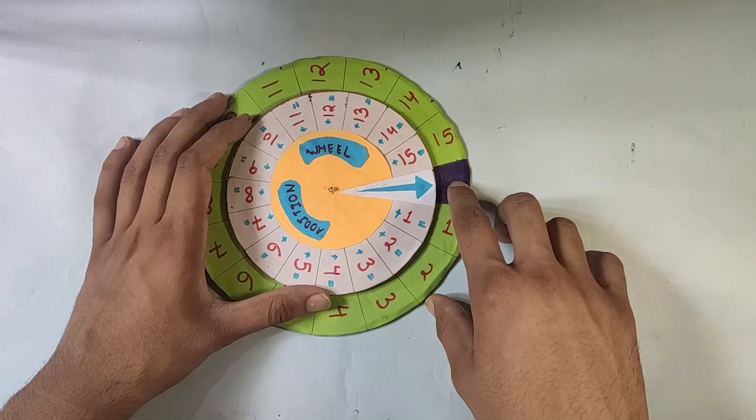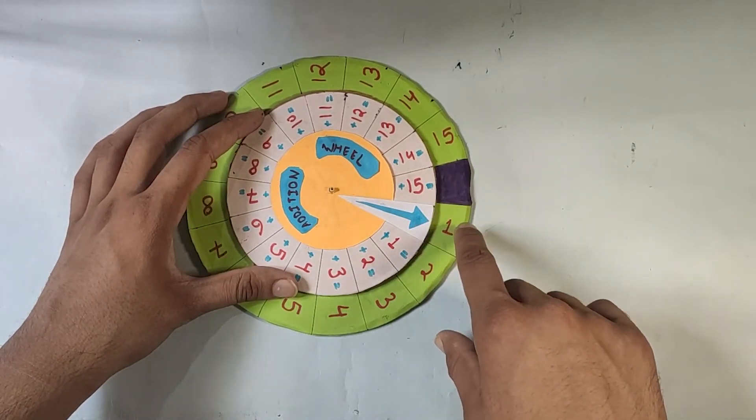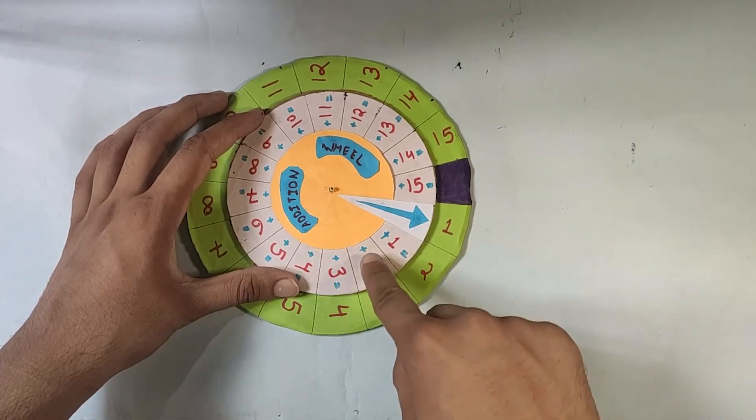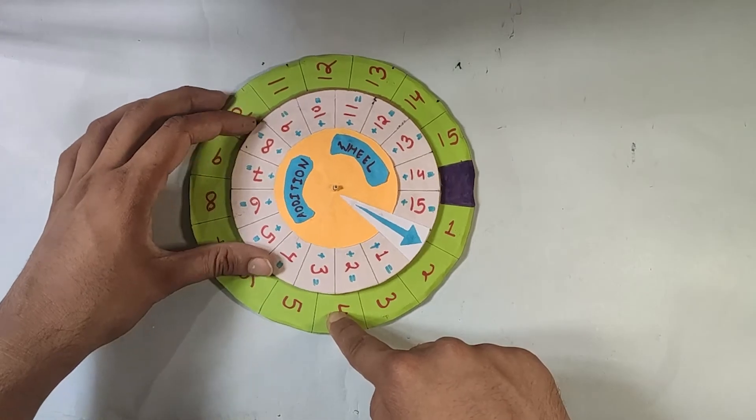We begin the arrow with this purple sign. Once we rotate this sign, for example, if it comes to 1, then 1 plus 1 equals 2, 1 plus 2 equals 3, 1 plus 3 equals 4. Similarly, if I rotate it more...